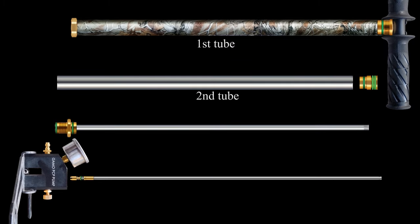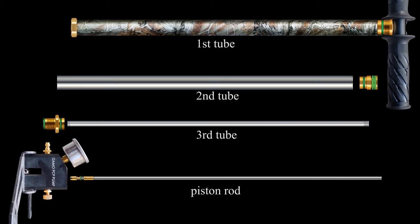Three-stage PCP pump consists of three tubes. There are also three pistons in it. You can see the separate parts of the pump.